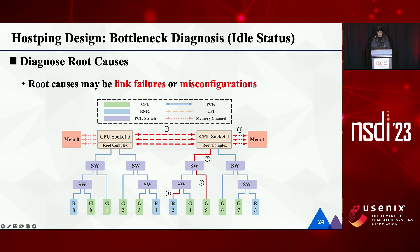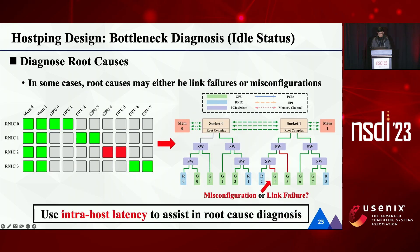Next, we need to diagnose the root causes. When the host is idle, the root causes are usually link failures or misconfigurations. For some abnormal links, the root causes are usually hardware failures such as CPU root port failure, memory channel failure, and UPI failure. For others, such as an abnormal GPU PCIe link, the root cause may be either failed links or misconfigurations. In this case, we could use intra-host latency to diagnose the root cause. If the latency from the associated R-NIC to this GPU is also abnormal, then the root cause may be misconfigurations; otherwise, link failures should be blamed.